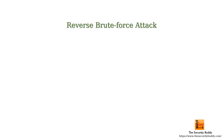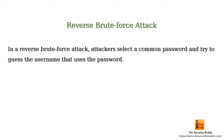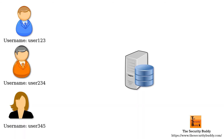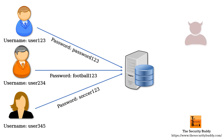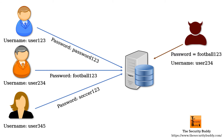In a reverse brute force attack, attackers select a common password and try to guess the username that uses that password. They usually try a common password against multiple usernames until the correct combination of username and password is guessed. Users often use weak passwords like football123, so it becomes easier for attackers to hack user accounts using reverse brute force attacks.